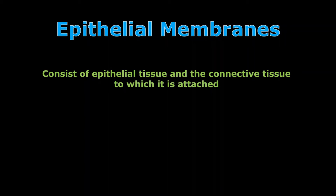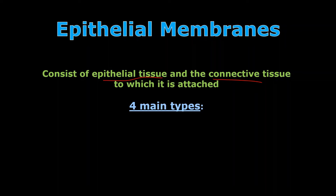The second part of this talk has to do with the epithelial membranes. A simple definition: some sort of epithelial tissue and some sort of connective tissue attached underneath it, under the basement membrane. So an epithelial membrane is the epithelium itself and the connective tissue that underlies it. There are four major types — most books just focus on the first three, but we'll cover all four here for completeness.